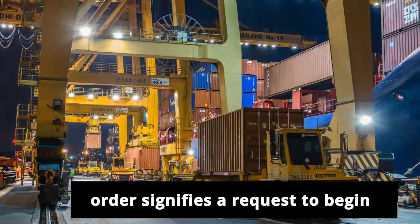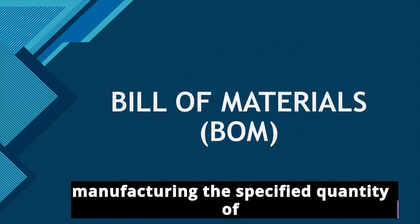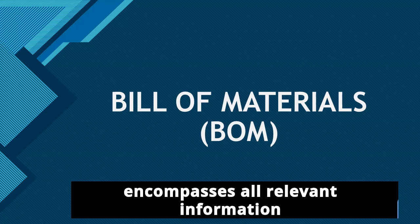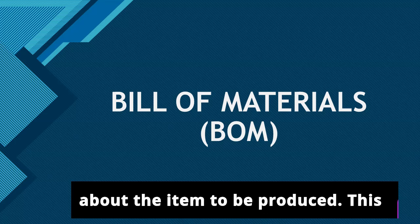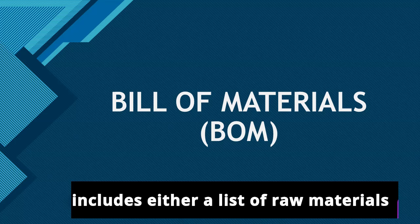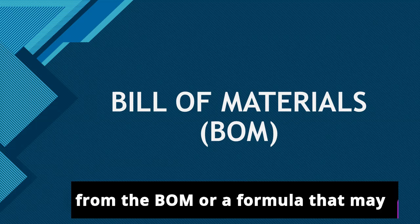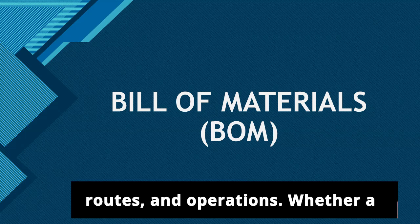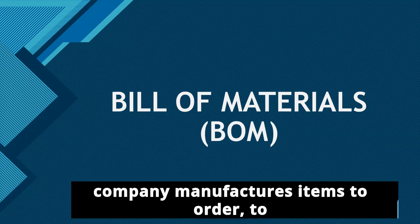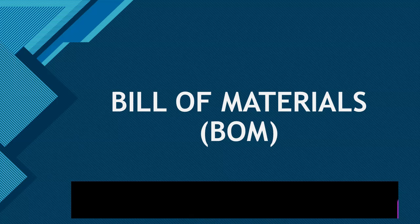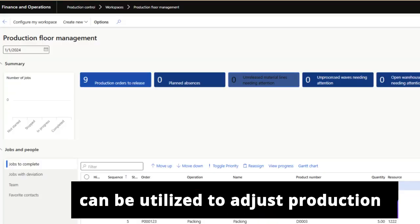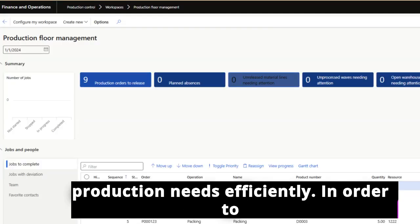Initiating a production order signifies a request to begin manufacturing the specified quantity of items. The production order encompasses all relevant information about the item to be produced. This includes either a list of raw materials from the BOM or a formula that may include co-products and by-products, along with the necessary resources, routes, and operations. Whether a company manufactures items to order, to stock, or based on custom engineering, the production control module's features can be utilized to adjust production orders, ensuring they meet specific production needs efficiently.